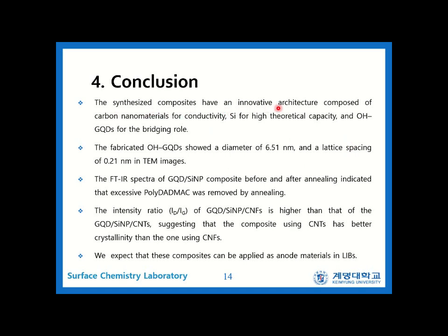In conclusion, the synthesized composites have an innovative architecture composed of carbon nanomaterials for conductivity, silicon for high theoretical capacity, and OH-GQDs for the bridging role. The fabricated OH-GQDs show a diameter of 6.51 nanometers and a lattice spacing of 0.21 nanometers in TEM images. The FTIR spectra of the GQD silicon composite before and after annealing indicated that the excess polydopamine was removed by annealing. The intensity ratio of GQD silicon CNFs is higher than that of GQD silicon CNTs, suggesting that the composite using CNTs has better crystallinity than the one using CNFs. We expect that these composites can be applied as anode materials in lithium-ion batteries.